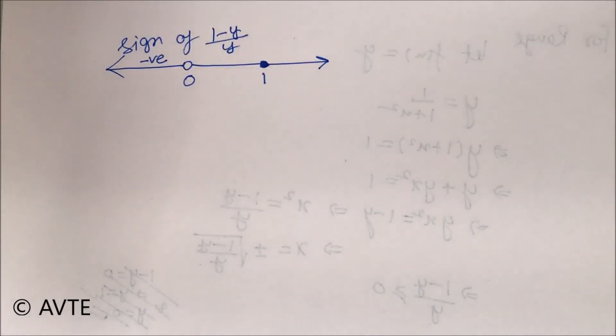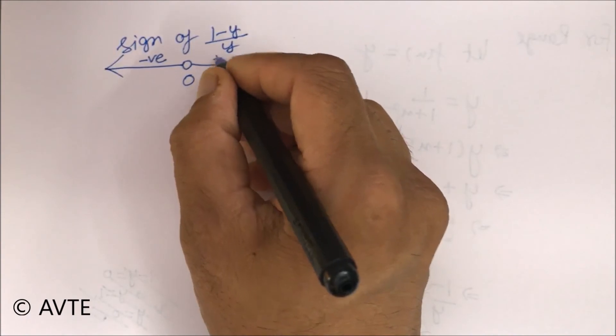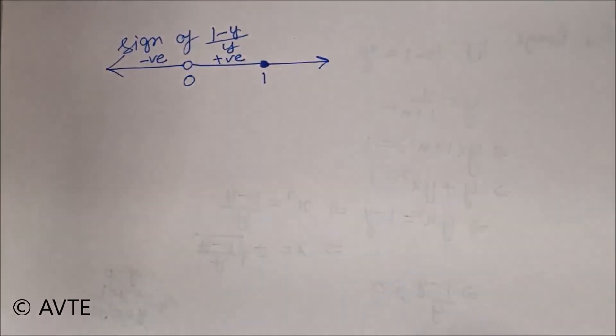Now put any number between 0 and 1. Say I put 1.5. So my numerator as well as denominator both will be positive. So the net effect will be a positive quantity.